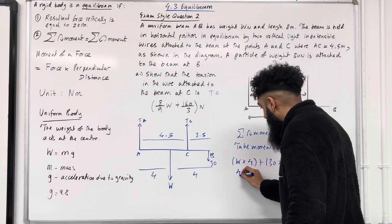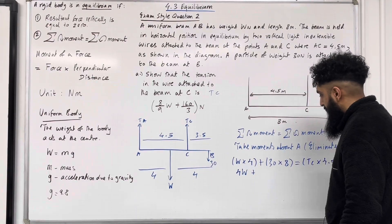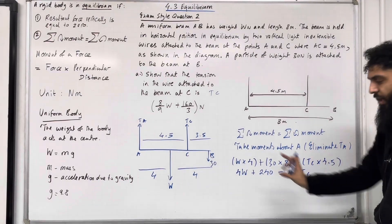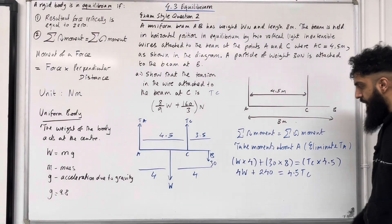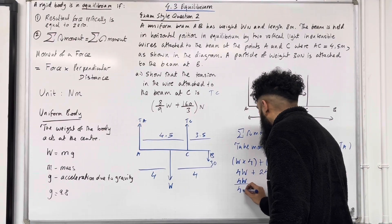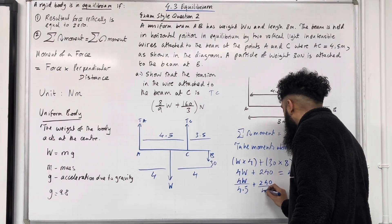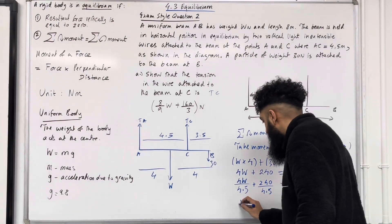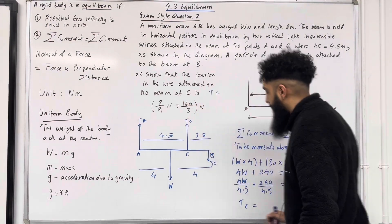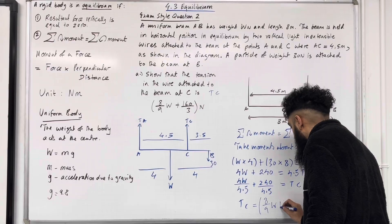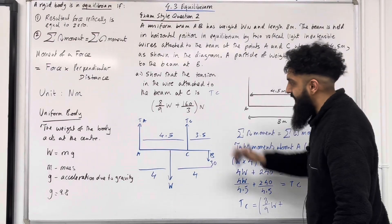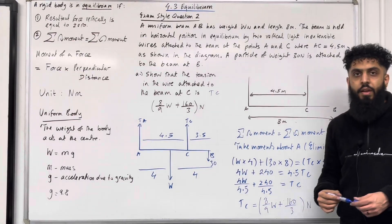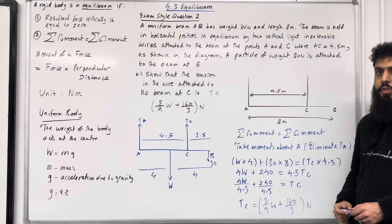So we have 4W plus 240 equals 4.5 TC. Dividing through by 4.5: 4W over 4.5 plus 240 over 4.5 equals TC. This gives TC equals 8/9 W plus 160/3 Newtons. That completes part A of exam style question two.